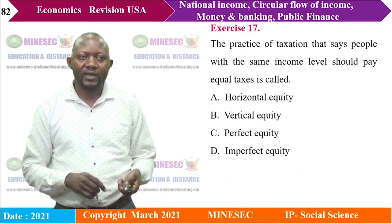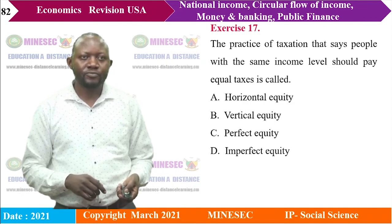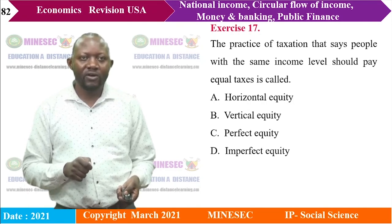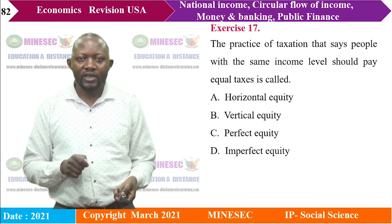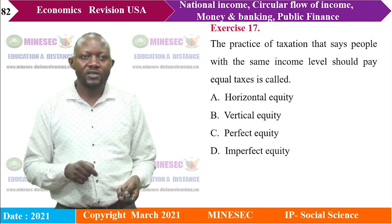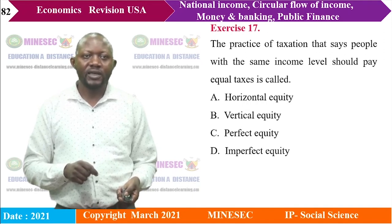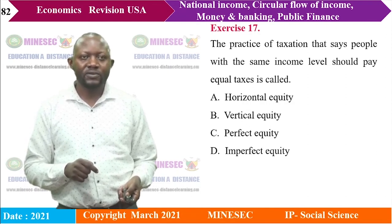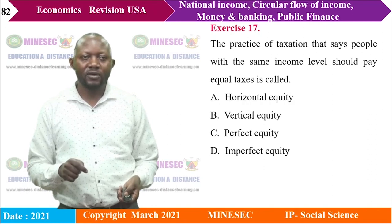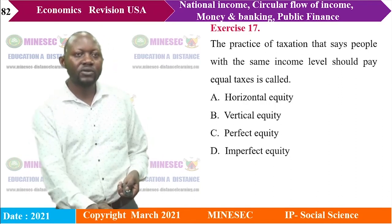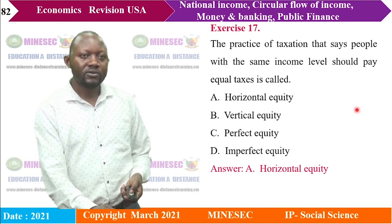Exercise 17: The practice of taxation where people with the same income level pay equal taxes is called: A) horizontal equity, B) vertical equity, C) perfect equity, D) imperfect equity. Horizontal equity means those at the same income level pay the same amount. The right answer is A — horizontal equity.